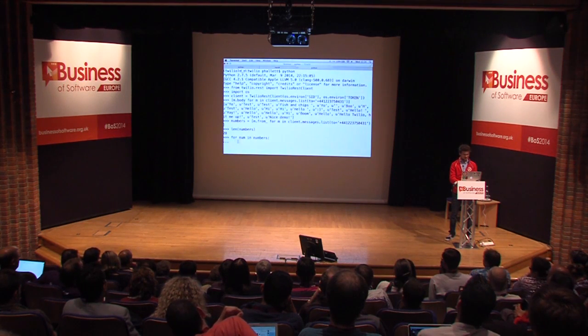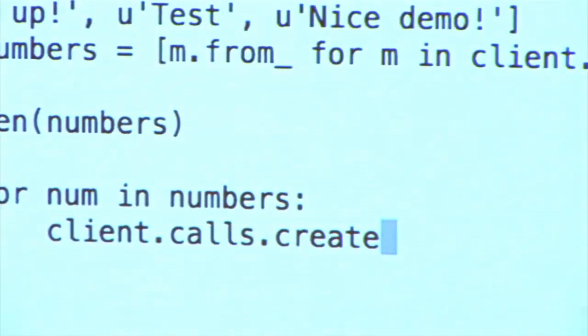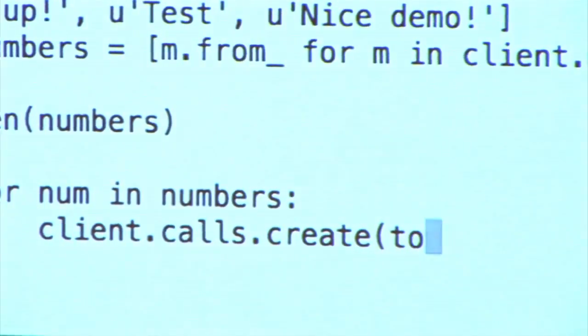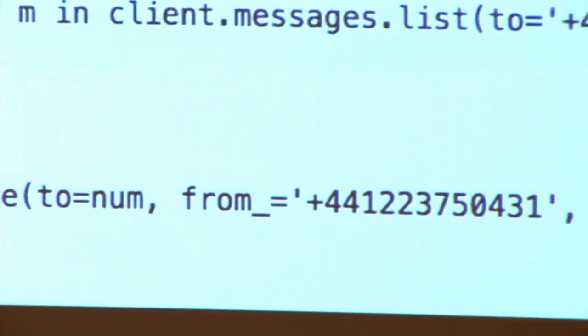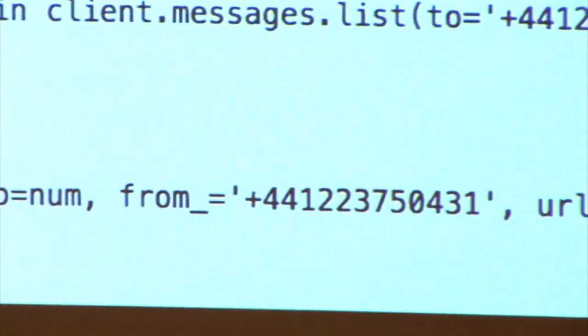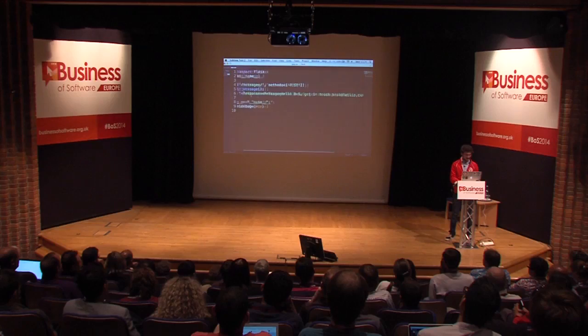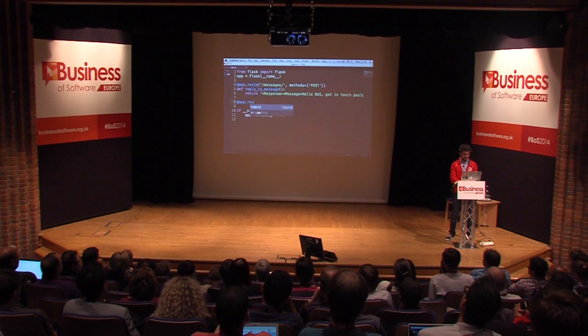For every single number in that list I want to place a call. I can create a phone call over the telephone network in a single line of code — it's going to come from this number and then we need to feed it a URL. I know what you're thinking — telephony is complex, we don't have a URL — but wait, this is software, we can do that in 30 seconds. Let's go write this route now.